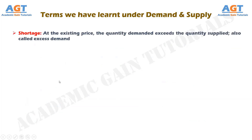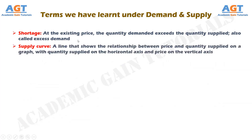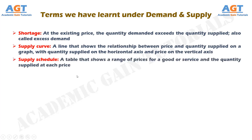Shortage is a situation in which, at the existing price, the quantity demanded exceeds the quantity supplied; also called excess demand. The supply curve is a line that shows the relationship between price and quantity supplied on a graph, with quantity supplied on the horizontal axis and price on the vertical axis. The supply schedule is a table that shows a range of prices for a good or service and the quantity supplied at each price.